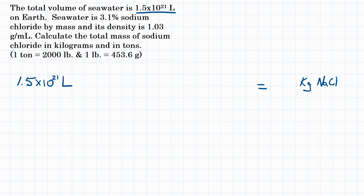Let's first look at the different relationships we're going to need to solve this problem. We're starting with liters. The problem gives us the density of seawater: 1.03 grams per milliliter. We're going to need that density to convert from volume to mass. So the density allows us to convert from volume to mass or vice versa.